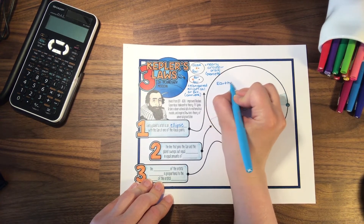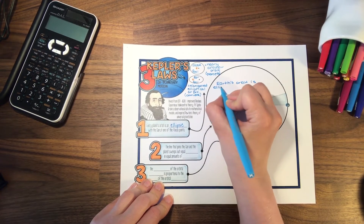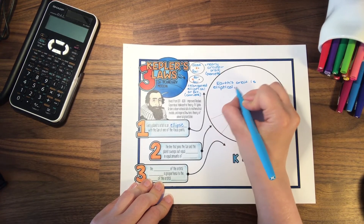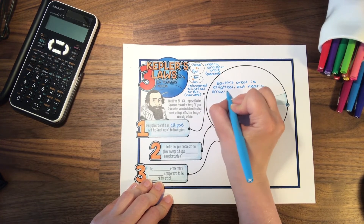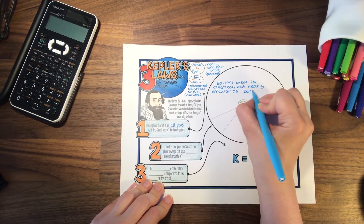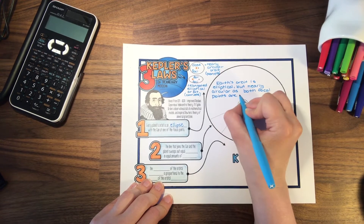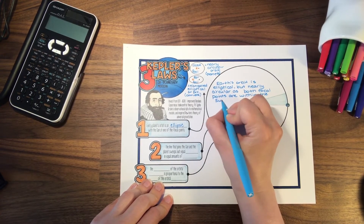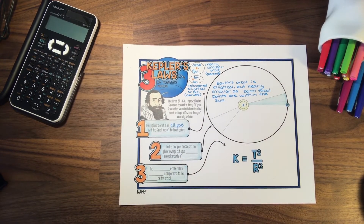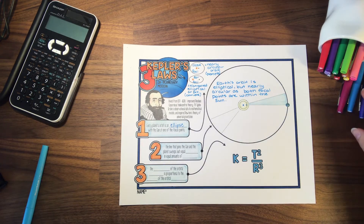Earth's orbit is elliptical but nearly circular, as both focal points are within the Sun. It's important to remember that the Sun is really huge — much larger than any of the planets. It has 98% of the mass of the solar system within that one object. So that is Kepler's first law: we're dealing with ellipses.